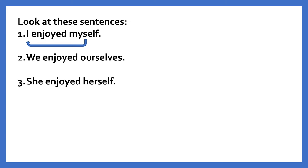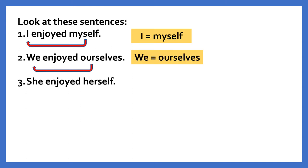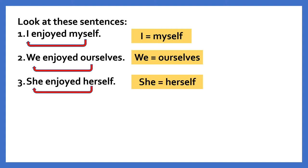In the first sentence, the word 'myself' refers to the subject 'I' in the sentence. I and myself mean one and the same person. In the second sentence, the word 'ourselves' refers to the subject 'we'. In the third sentence, the word 'herself' refers to the subject 'she'. The words she and herself mean the same person.